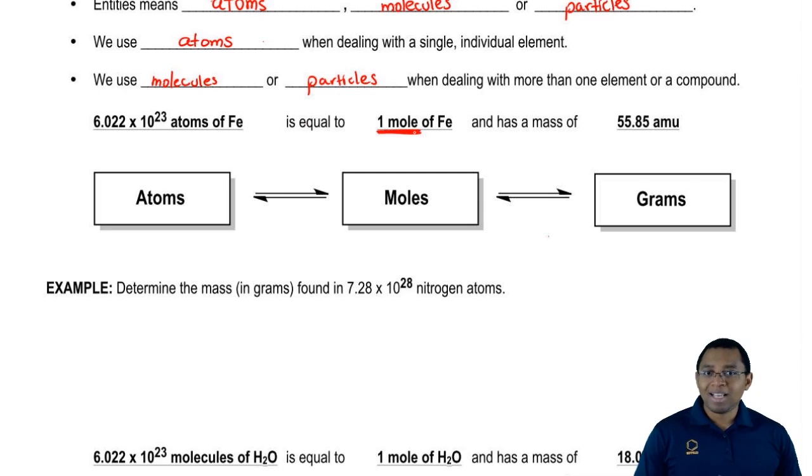One mole of iron is equal to its atomic mass that you see on your periodic table. And if you take a look, you'll see 55.85. So that's representative of its atomic mass unit, or we can say 55.85 grams per mole.